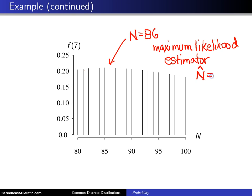Namely 7 animals with tags, and that is N hat equals 86. So the answer to the question is, if all those assumptions are satisfied, then the most likely population size is 86 animals.